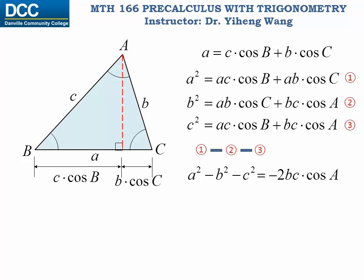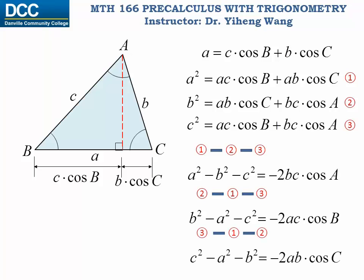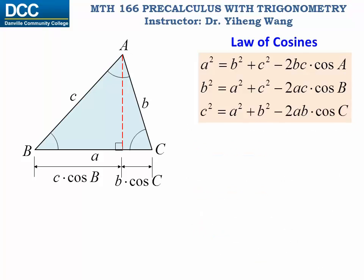The terms ac·cos(b) and ab·cos(c) are both cancelled out. Similarly, taking equation two minus one minus three, and equation three minus one minus two, gives us the remaining equations. After reorganizing these three equations, we get the set known as the Law of Cosines. Notice the symmetry among the three equations, and the similarity to the Pythagorean theorem, which should help you memorize them.